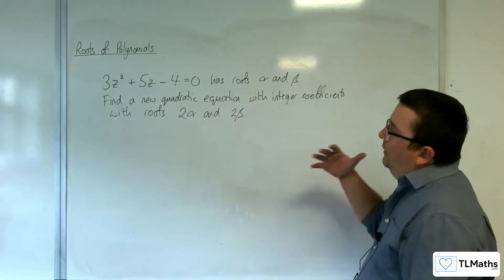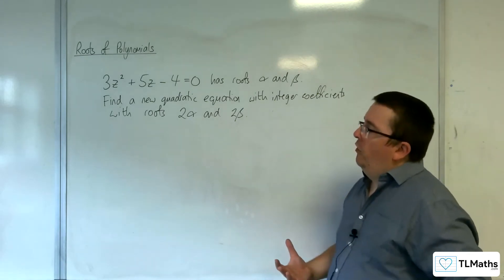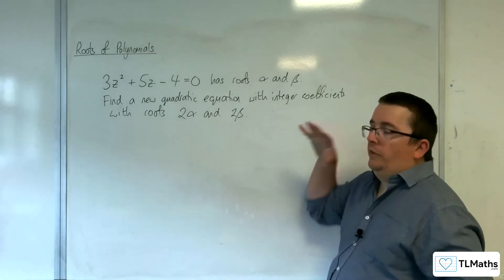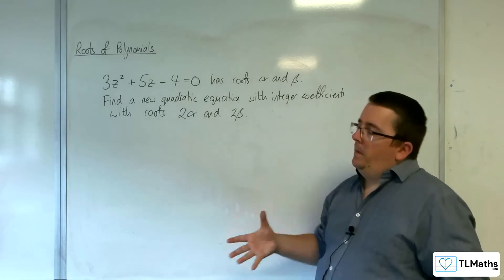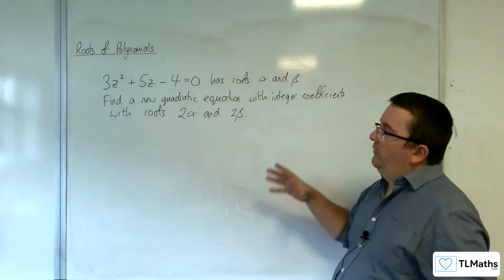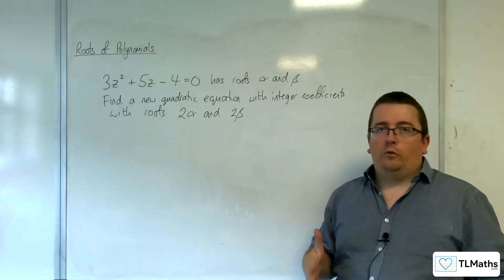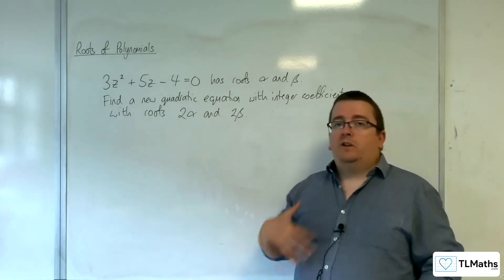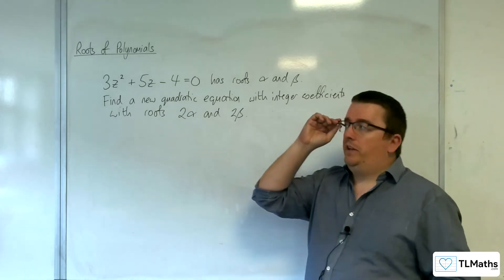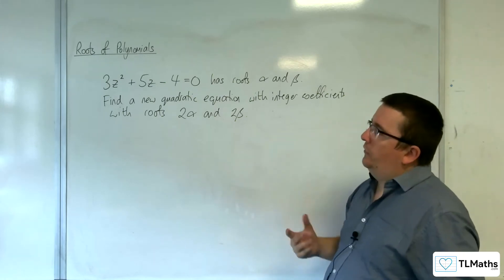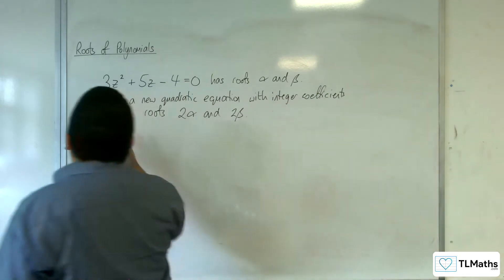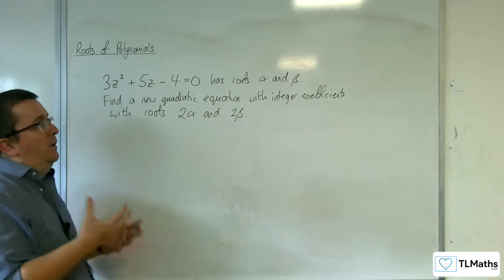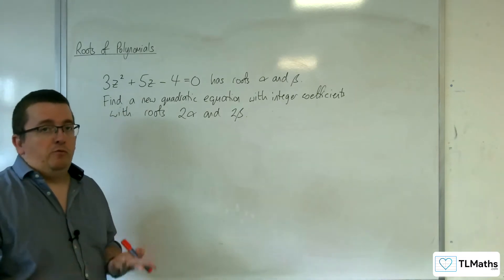Now, what we've learnt from using the sum and product of the roots, that process makes this very, very straightforward. Now some examples can be more complicated than others, and we're going to go through several examples of these in the coming videos, but just to kind of get this going, the first thing that you would want to do is work out α + β and αβ, the sum and product of the roots.